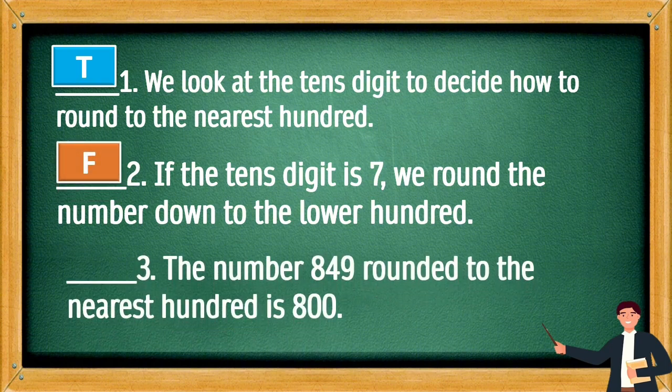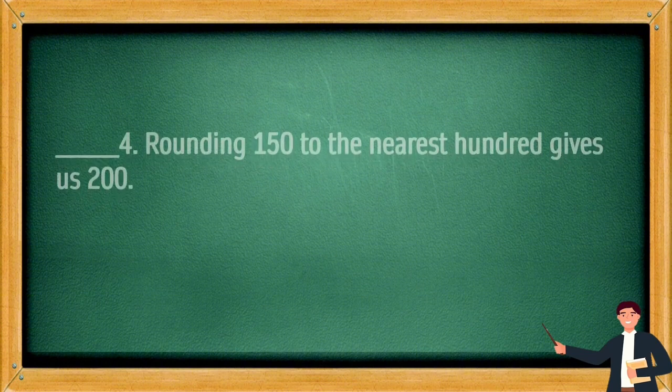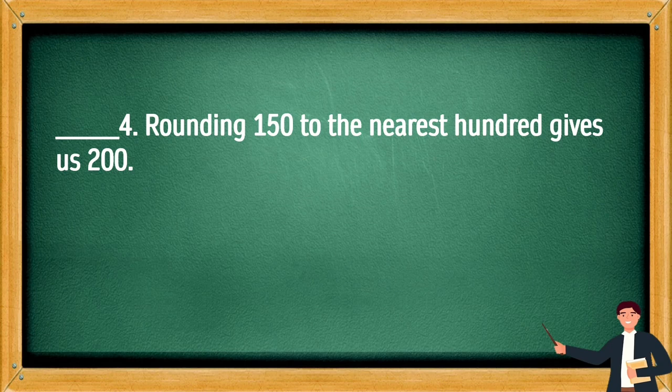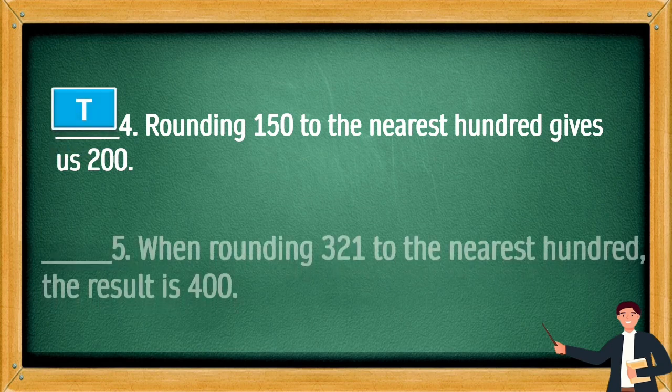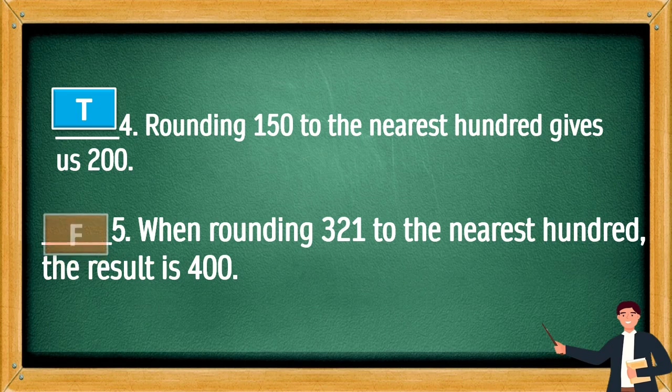The number 849 rounded to the nearest 100 is 800. Rounding 150 to the nearest 100 gives us 200. This is T. When rounding 321 to the nearest 100, the result is 400. This is F.